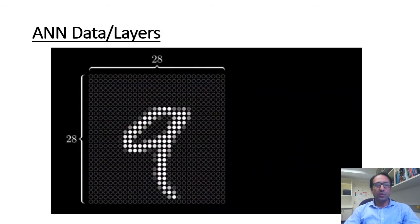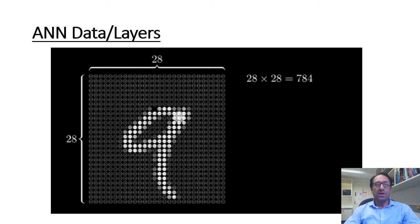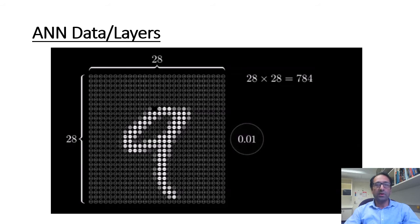Given an input image, the network starts with a bunch of neurons corresponding to each of the 28 times 28 pixels of the input image, which is 784 neurons in total. Each one of these neurons holds a number that represents the grayscale value of the corresponding pixel, ranging from 0 for black pixels up to 1 for white pixels.